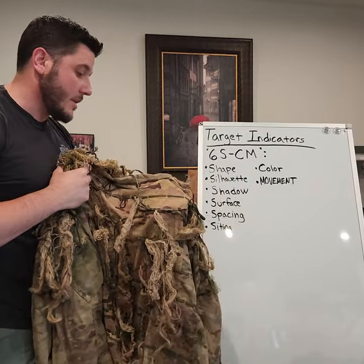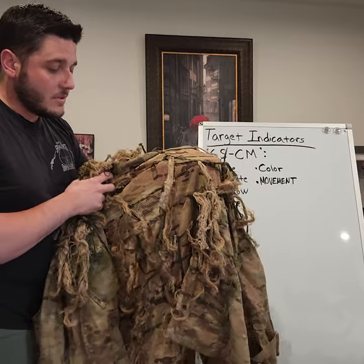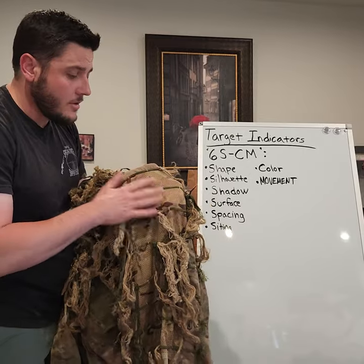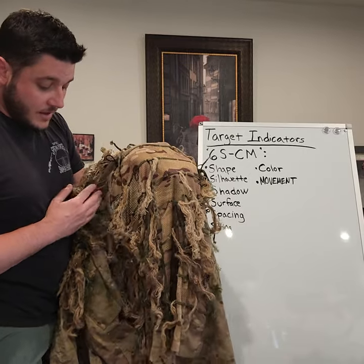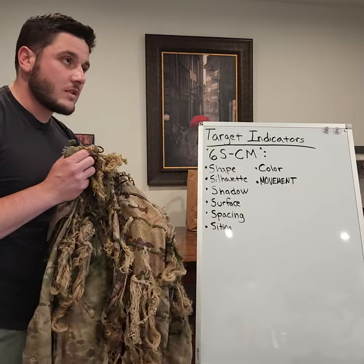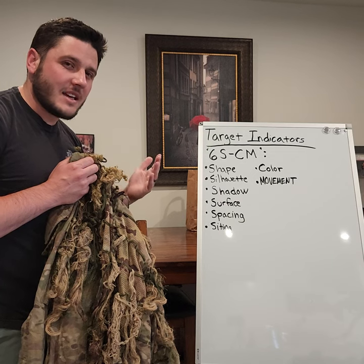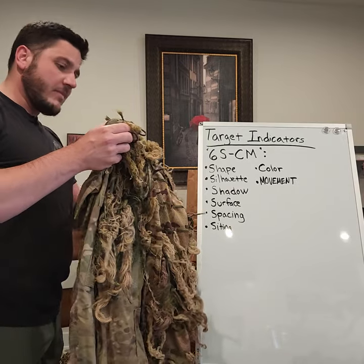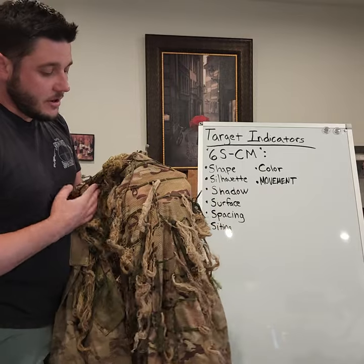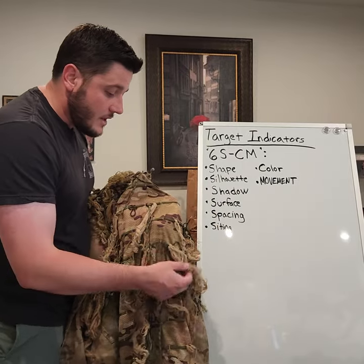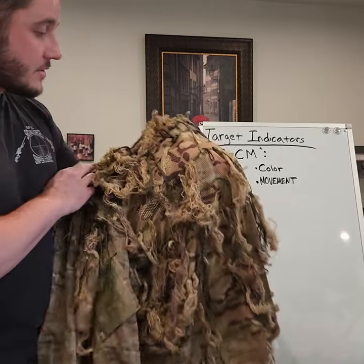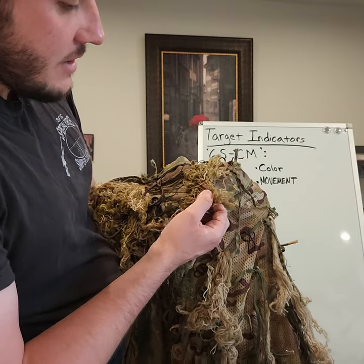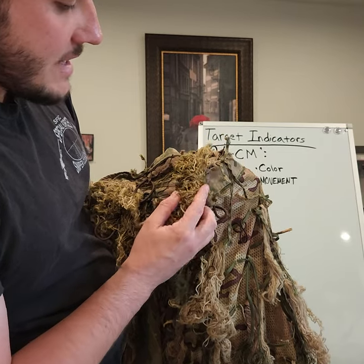The important thing about ghillie suits and camouflage: your ratio is 70/30. You want 70% natural vegetation on here and 30% artificial camouflage — the artificial camouflage being the actual pattern of the fabric, in this case multicam. Multicam works in probably three-quarters of environments, minus high desert where things are light tan or almost pink, and of course a snowy or arctic environment. This artificial jute material here is a synthetic fabric — if you look closely it's fraying a bit but it almost has a little sheen to it.